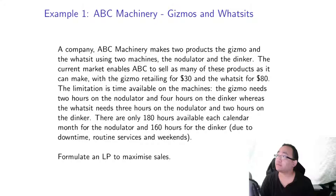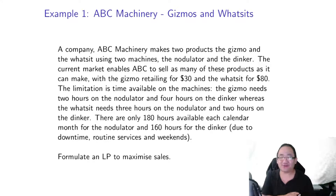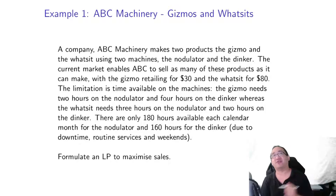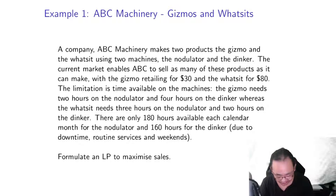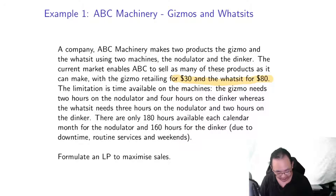We're going to jump straight into an LP example. This is a completely made-up company and product: ABC Machinery, making Gizmos and WhatSits. The current market has the Gizmo retailing for $30 and the WhatSit for $80. We want to maximize sales, so that should be our objective.